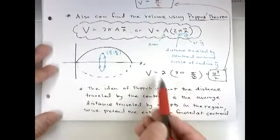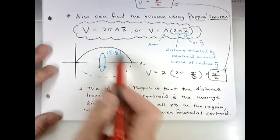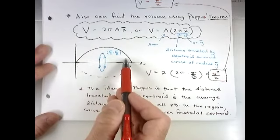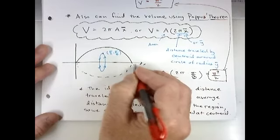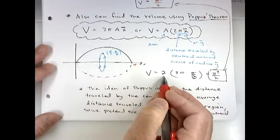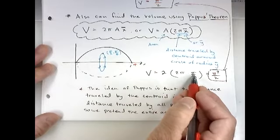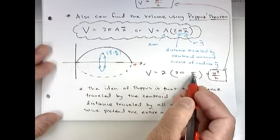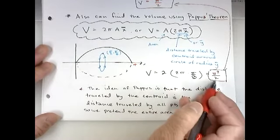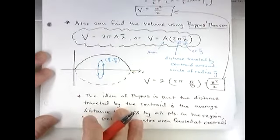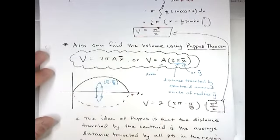And lo and behold, if you do this formula, the area of our cross section, we did that when we did the mass earlier, the area of one arc of sine of x from zero to pi comes out to be 2. And then I multiply that by 2π times ȳ, which is pi over 8. That gives me 4π² over 8, which simplifies to π² over 2. Which is exactly the same answer we had using the disk method.